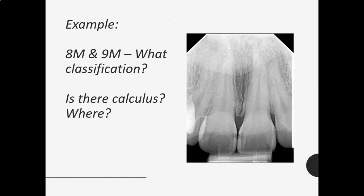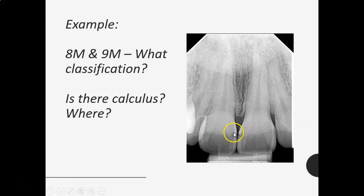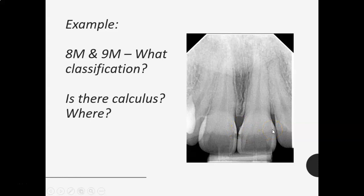Here's an example between teeth 8 and 9. It's clearly all the way through the enamel and into the dentin — I'd say maybe less than halfway into the dentin, so I'd classify this as probably a Class 3 on this side, and maybe a Class 3 on the other side as well. There's also a little triangular spur right here — that's what we call a spur of calculus, and there's the interproximal decay.